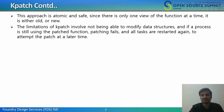This approach is atomic and safe since there is only one view of the function at a time — either old or new — and there are no consistency issues that arise if a new function changes data structures differently to the old function. The limitations of kpatch involve not being able to modify data structures. If a process is still using the patched function, patching fails and all tasks are restarted again to attempt the patch at a later time. There is some overhead in stopping and starting all tasks, resulting in a small loss of service.